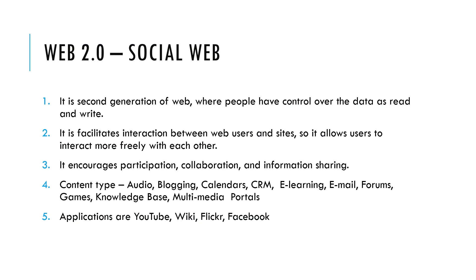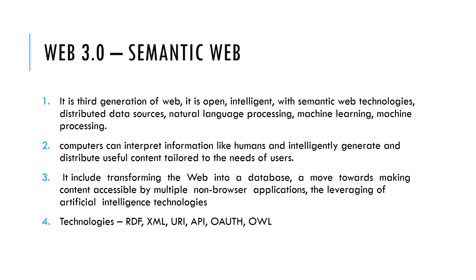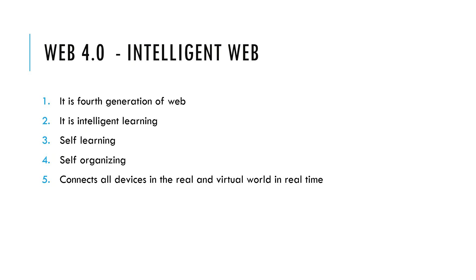Web 3.0 is the third generation, called the semantic web. It is open and intelligent, using semantic web technologies, distributed data sources, natural language processing, and machine learning. Computers can interpret information like humans and intelligently generate and distribute useful content tailored to users' needs. It integrates web information into databases and makes content accessible by multiple non-browser applications, leveraging artificial intelligence. Technologies include RDF, XML, URI, API, and others.